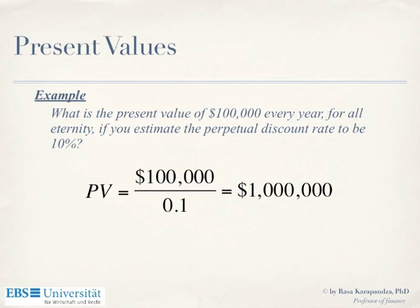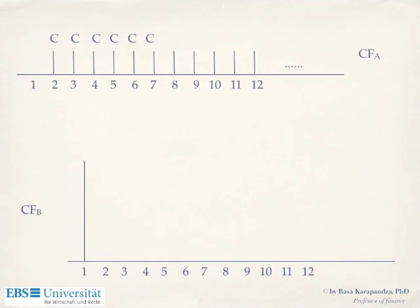One thing where people make mistakes every year on the exam — timing is very important. The formula C/R works only when the first payment starts in one year from now. Not today, not in three years, not in ten years — but one period from now. Now let's solve a problem where the perpetuity starts in year two, not year one. What is the present value of that cash flow stream?